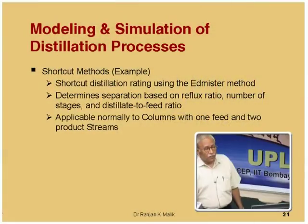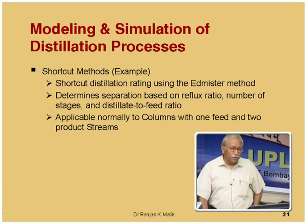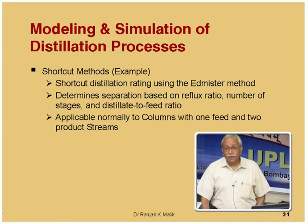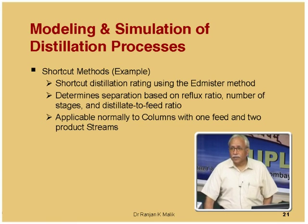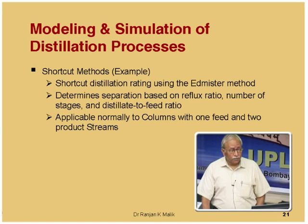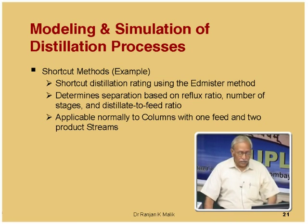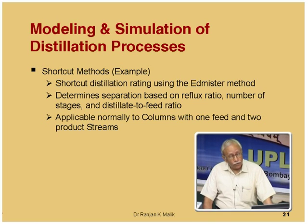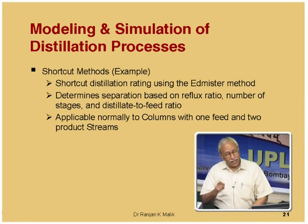For shortcut distillation design, Wynn-Underwood-Gilliland is used in Aspen Plus — Wynn is a slightly modified version of Fenske. Whether using Wynn-Underwood-Gilliland or Fenske-Underwood-Gilliland, conceptually we are doing the same thing. This shortcut method determines minimum reflux ratio, minimum number of stages, and either actual reflux ratio or actual number of stages. It is applicable normally to columns with one feed and two product streams — simple columns.